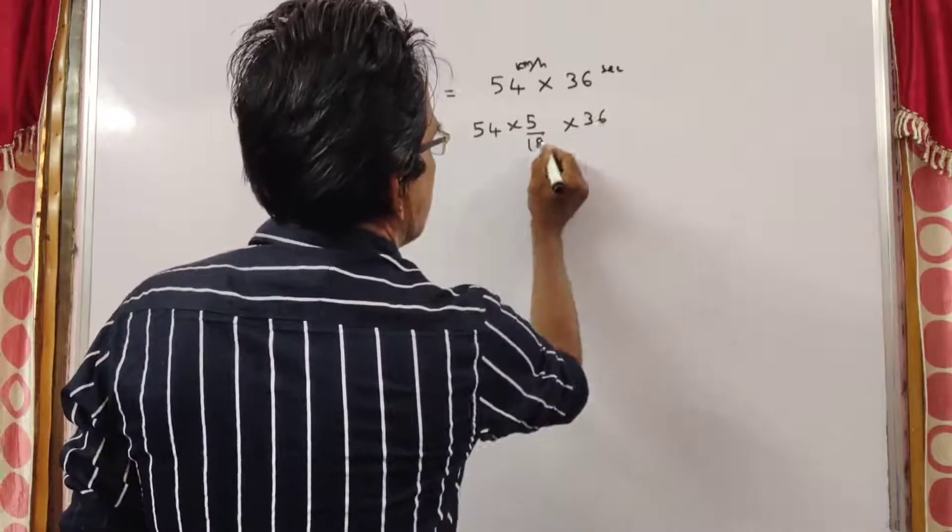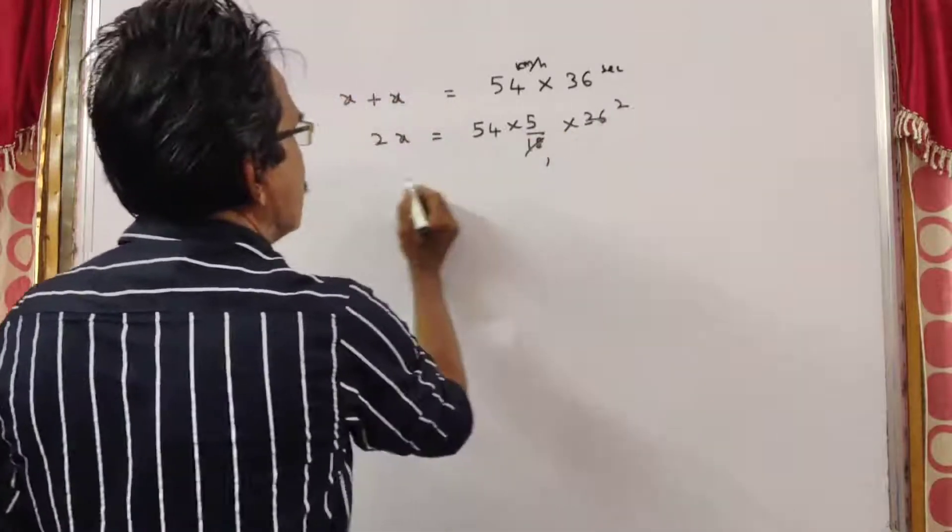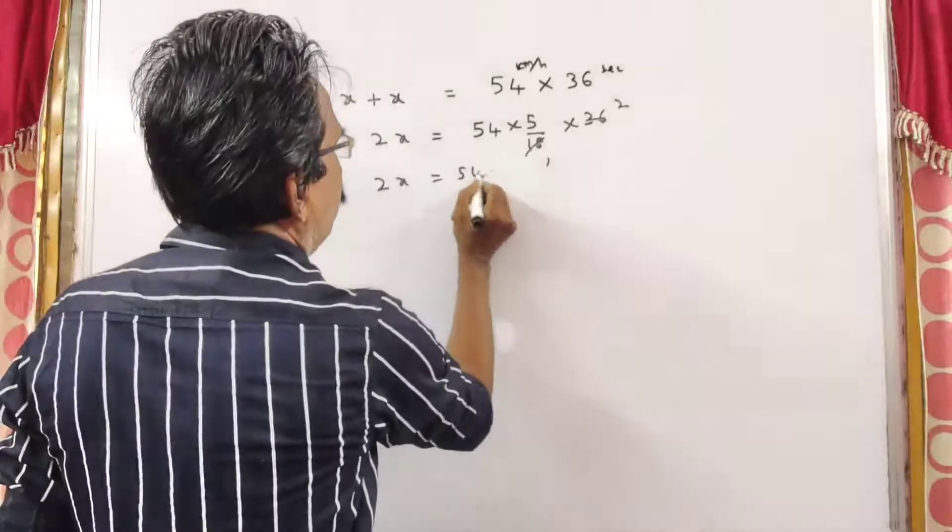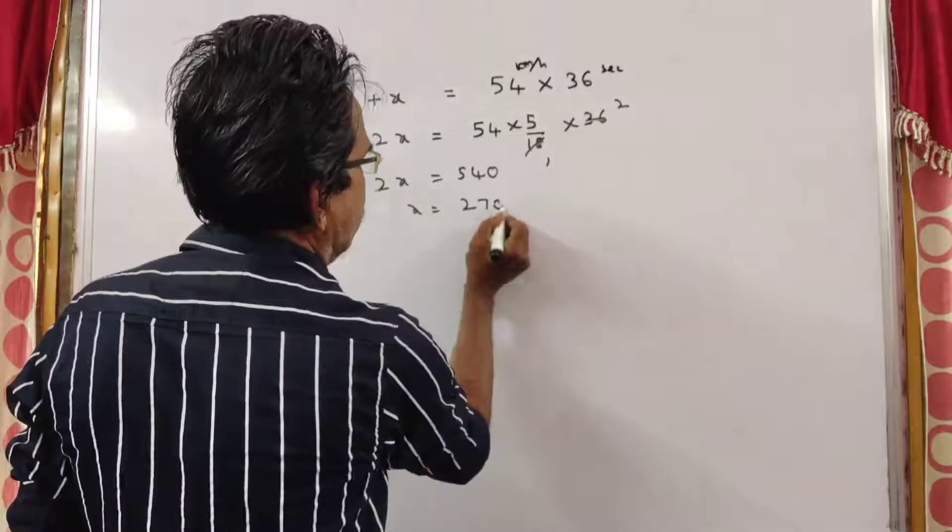Into 36... 18, 2, 2, 5, 2, 5, 10, 5, 40. 2X is equal to 540. X is equal to 270 meters.